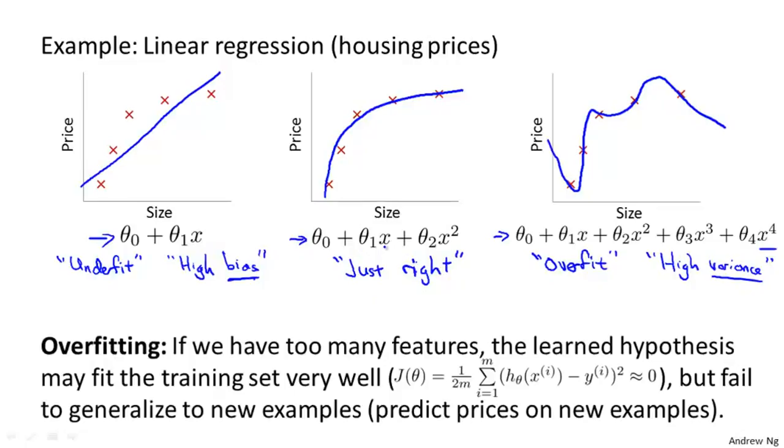To recap a bit, the problem of overfitting comes when, if we have too many features, then the learned hypothesis may fit the training set very well. So your cost function may actually be very close to zero, maybe even zero exactly, but you may then end up with a curve like this that tries too hard to fit the training set, so that it even fails to generalize to new examples, and it fails to predict prices on new examples well. And here the term generalize refers to how well a hypothesis applies even to new examples, that is to data, to houses that it hasn't seen in the training set.